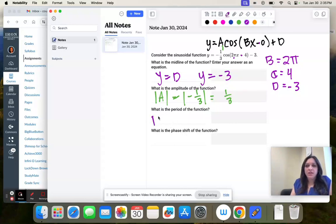The period is equal to two pi over the absolute value of b. So two pi over the absolute value of two pi. The absolute value is two pi, just two pi. So two pi divided by two pi is just one.